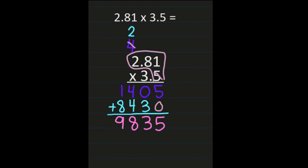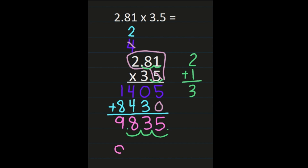Now that I've multiplied everything, it's time to place my decimal. To do that, I need to count how many places are behind the decimal in my problem. In 2 and 81 hundredths, there are two digits behind the decimal. In 3 and 5 tenths, there is one digit. So there are three digits altogether behind a decimal point in my problem. I'll place my decimal behind the last digit and move it three places to the left. My final answer is 9 and 835 thousandths.